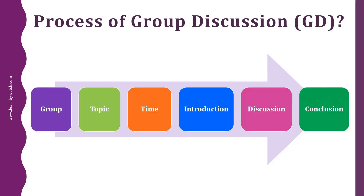Let's see what is the process of group discussion, step by step. First, the group is selected by company professionals or the selection committee. Second is the topic, which is announced to the group, usually followed by a preparation time of three to five minutes. More than five minutes of preparation time may be given only if the GD is a case study discussion with a long case statement.